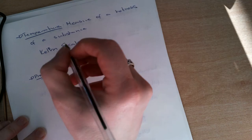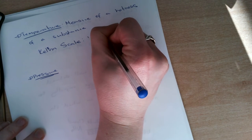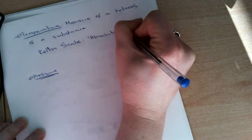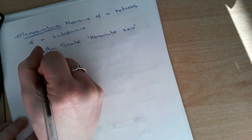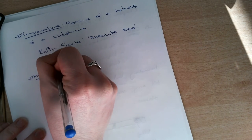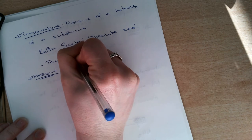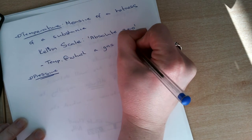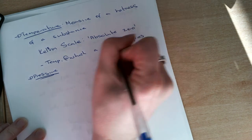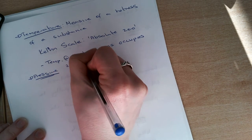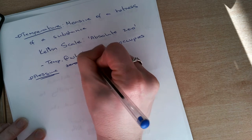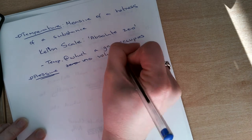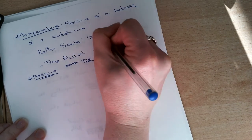And Kelvin scale is what we call absolute zero. Absolute zero is the temperature at which a gas occupies no volume. So no volume. That's where the zero comes from - no volume, absolute zero.